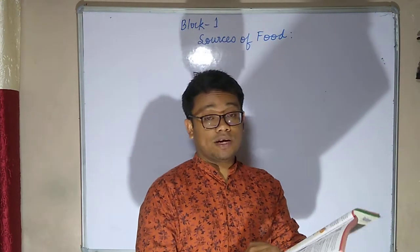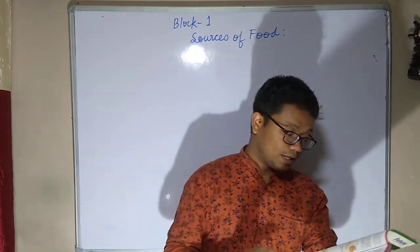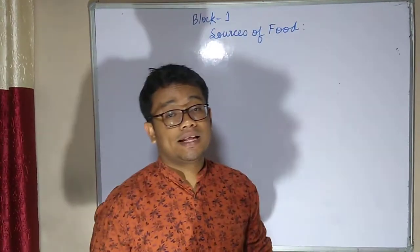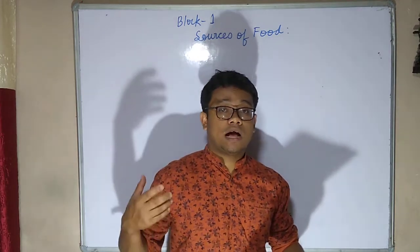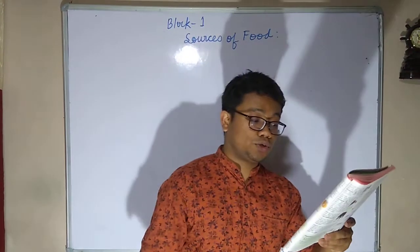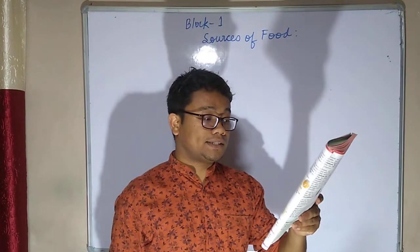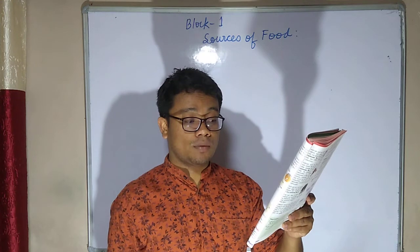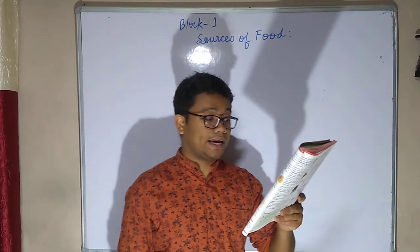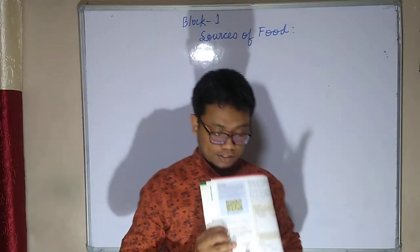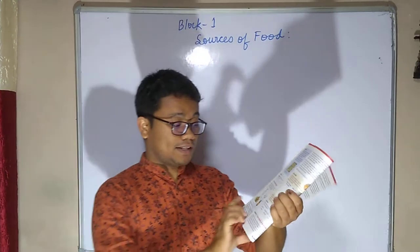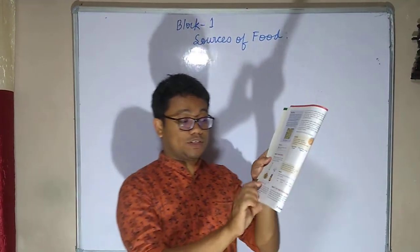Now moving to Lesson Two: food from animals. Besides plants, we also get food from animals. We mainly get four food items from animals: meat, honey, eggs, and milk. As shown in the figure in your book, these are the key animal-sourced foods.